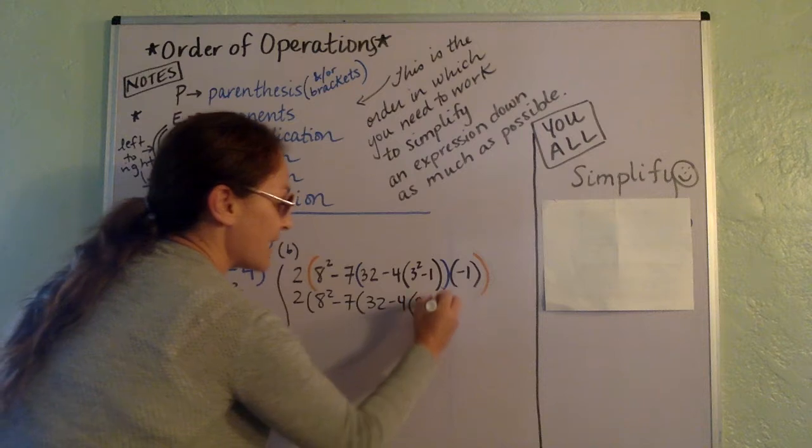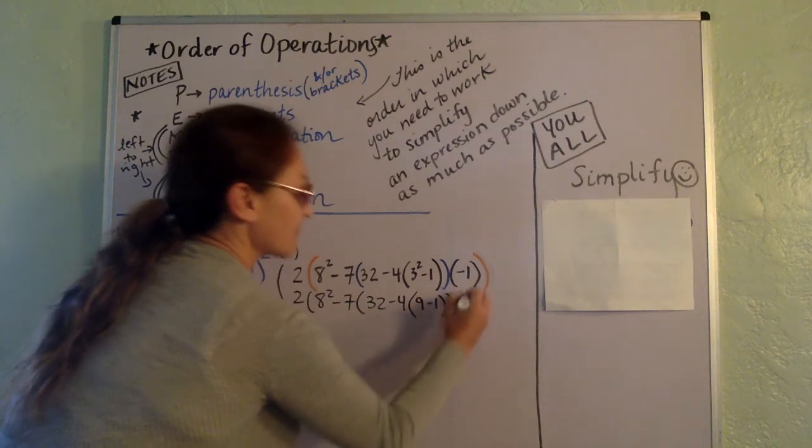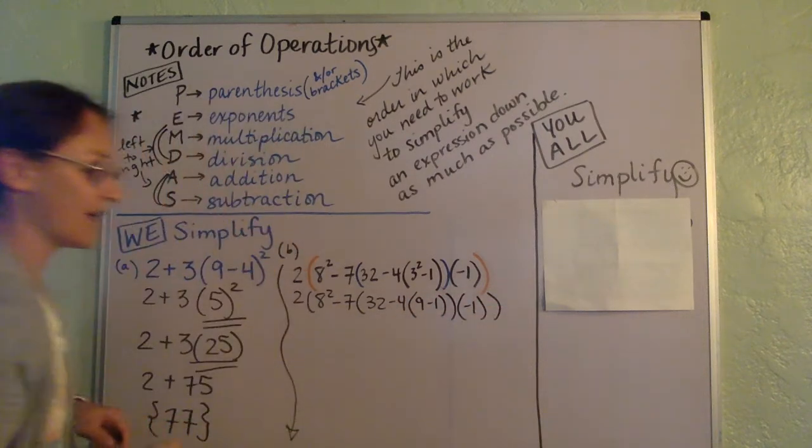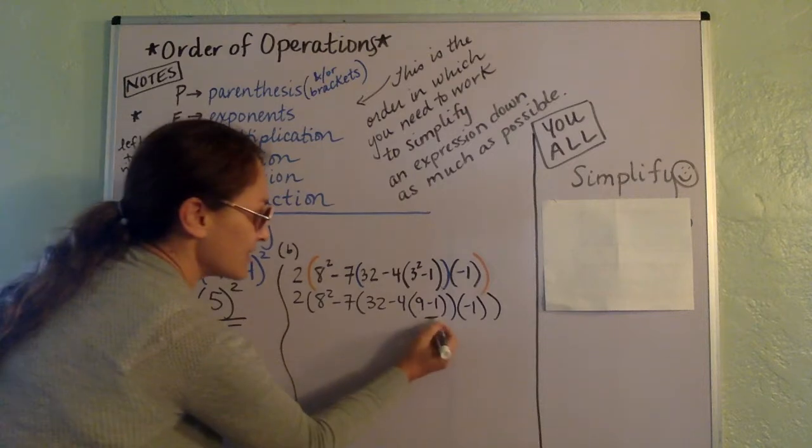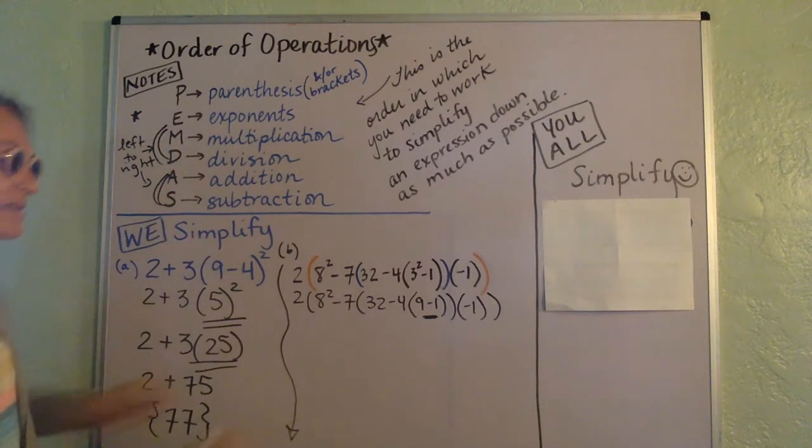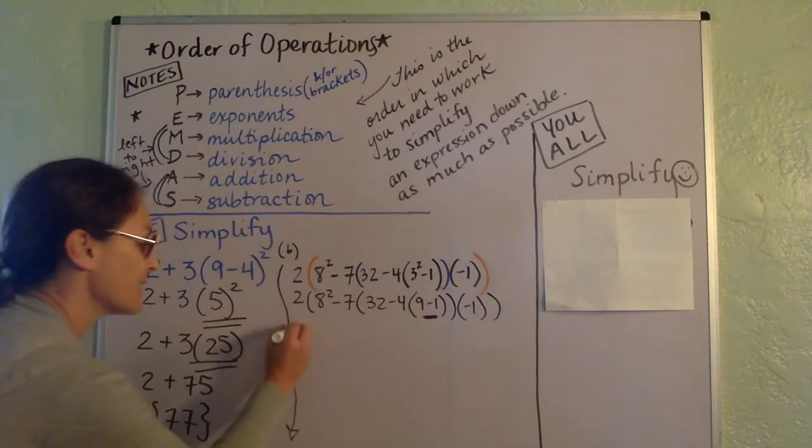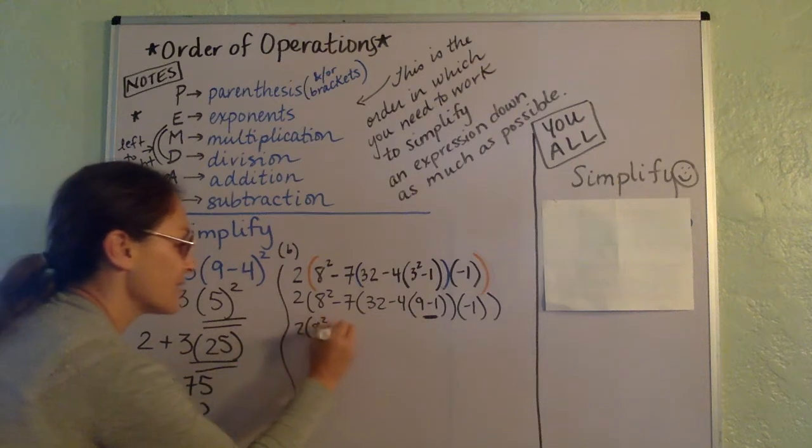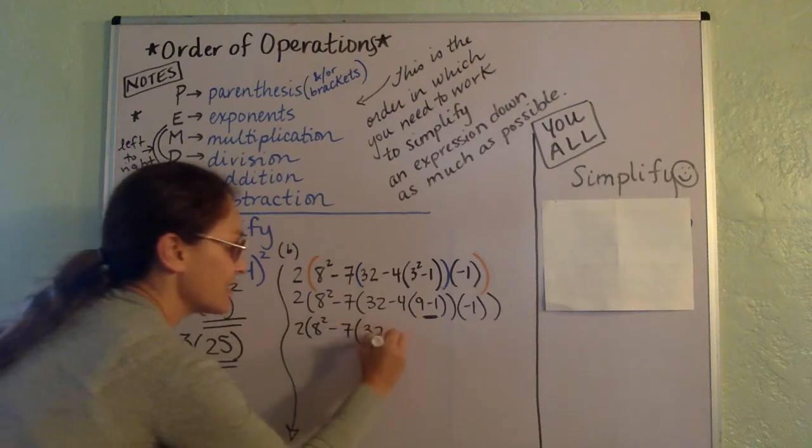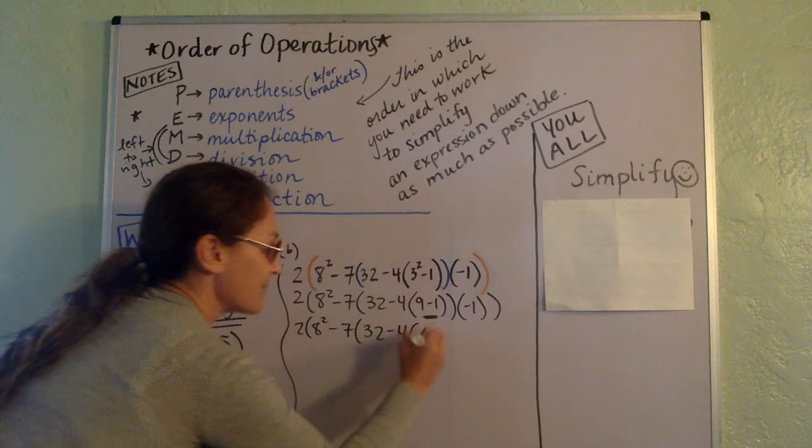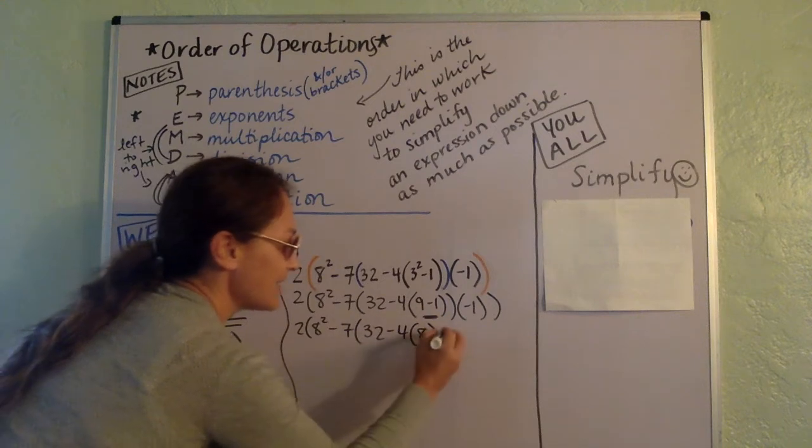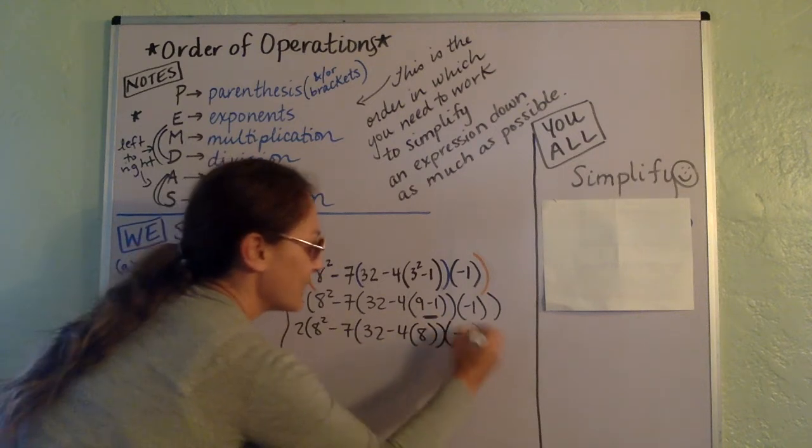3 squared is 9. And then, again, I'm going to just continue with that parentheses. What's inside this parentheses. So that's 2, 8 squared minus 7. That's 32 minus 4 times 8 because 9 minus 1 is 8. Close that one.